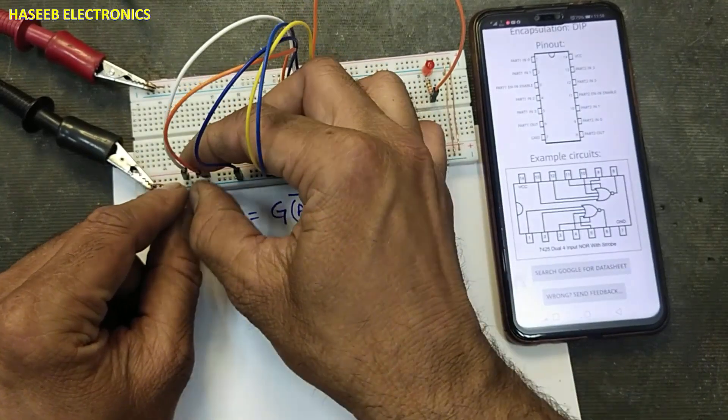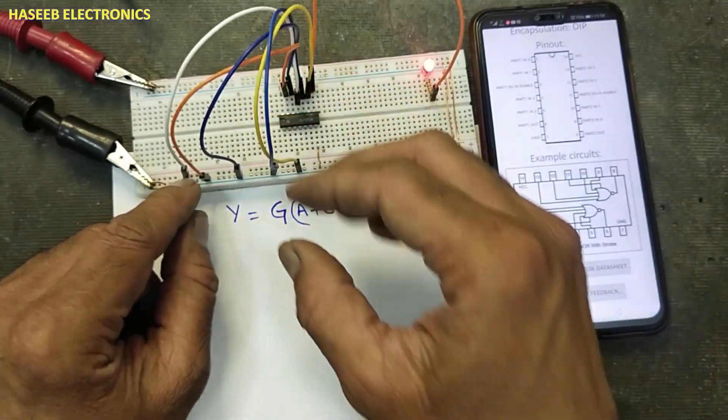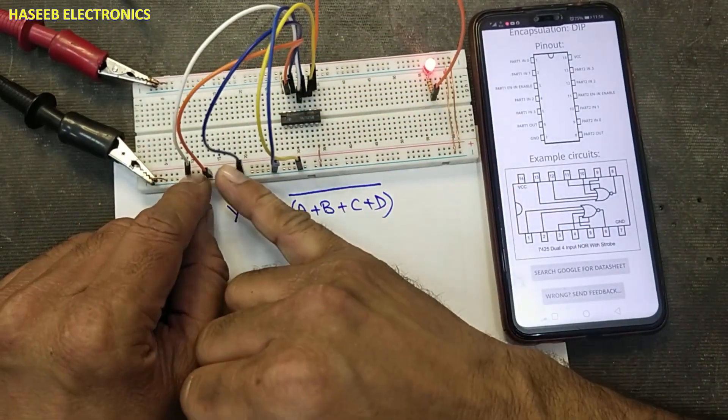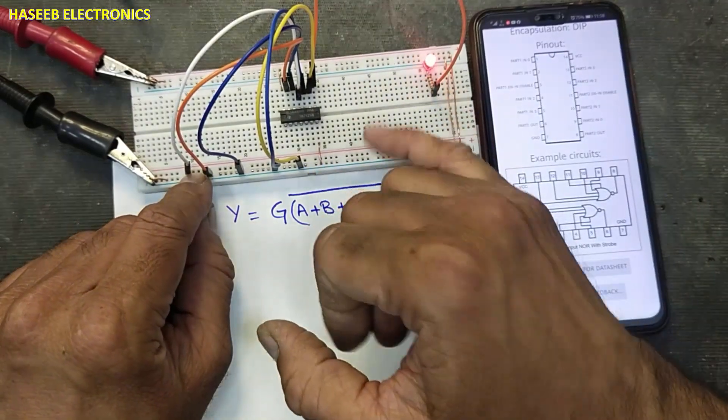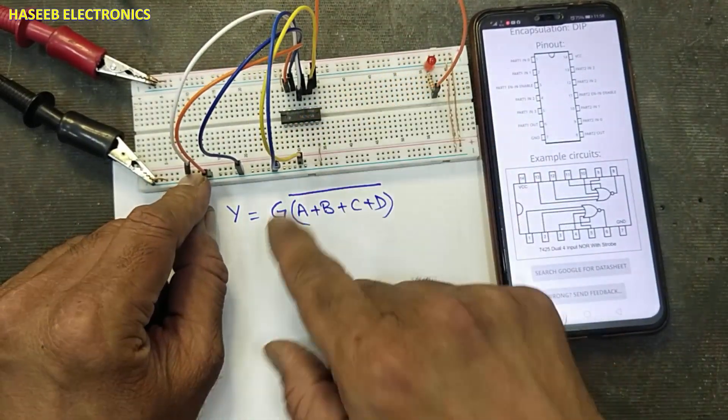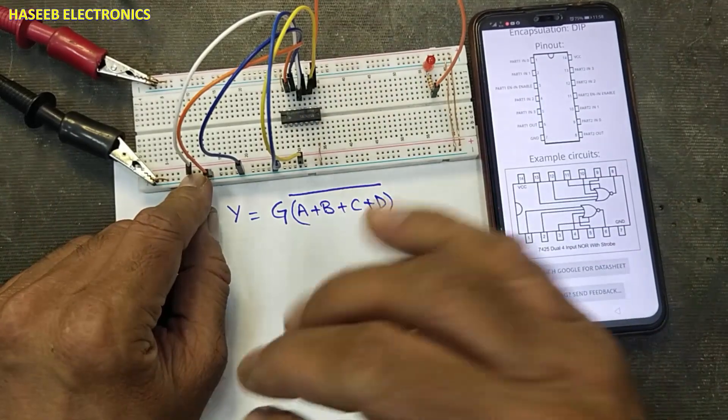Any input high, the output will remain low when the strobe is active. All inputs low, output is high. Any input will become high, output will become low.